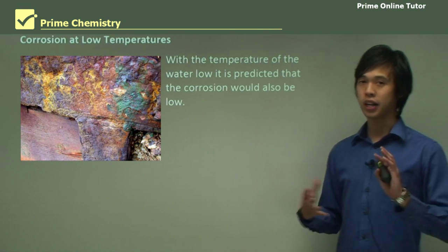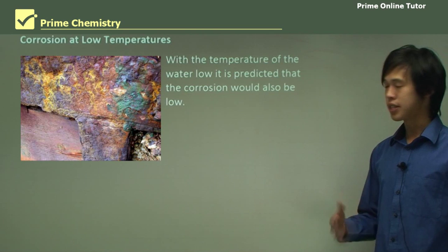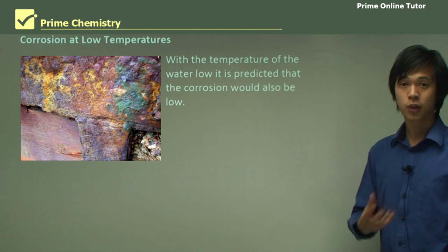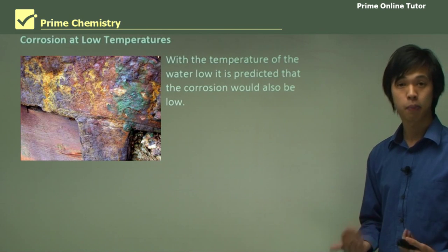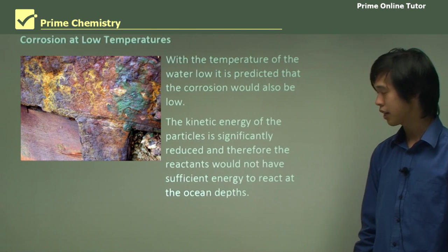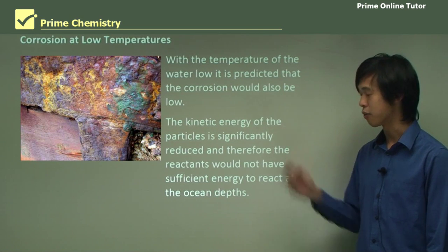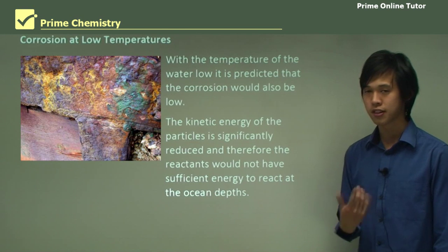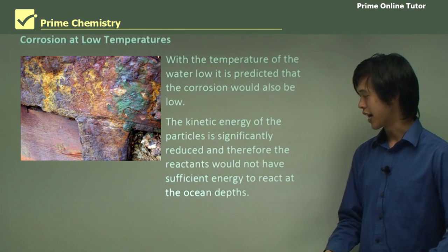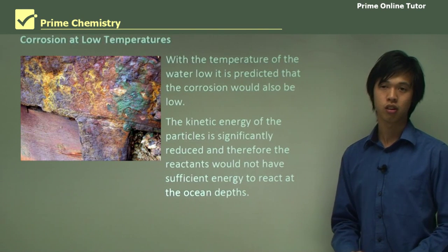Now we'll talk more about low temperature. So with the temperature of the water low, it is predicted that the corrosion will be really low as well, because the temperature is low, corrosion will be low. So that's the hypothesis. And the reason for that hypothesis is that the kinetic energy of the particles will be a lot lower, and therefore the reactants won't have the sufficient energy to react at the ocean depths. So it simply won't have the energy because the temperature is too low.